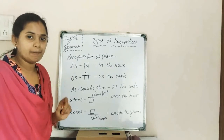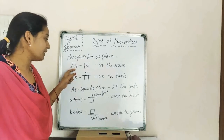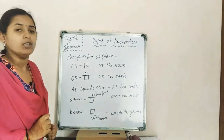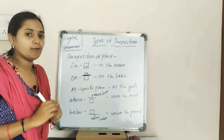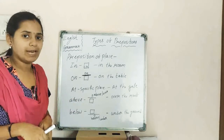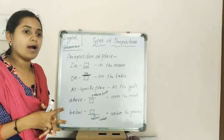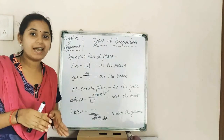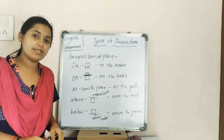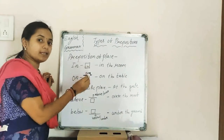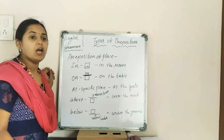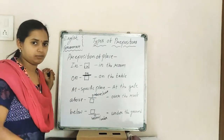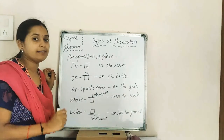The first place preposition is 'in.' Always remember that 'in' is used for things which are inside a boundary. A room has a boundary — so we say 'I am in the room,' meaning inside a boundary. If you are inside something which has a boundary, you use 'in.' For example: the butterfly is in the room, in the jungle, in the park.